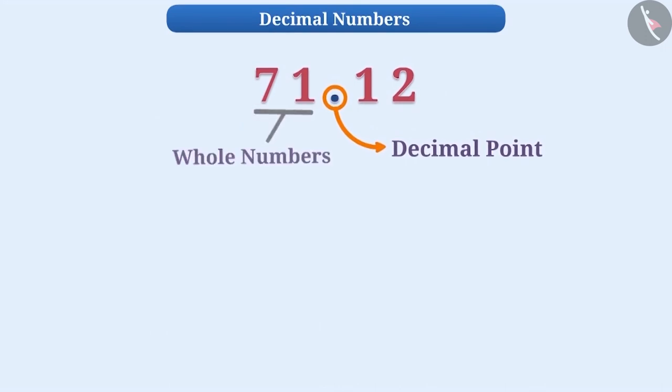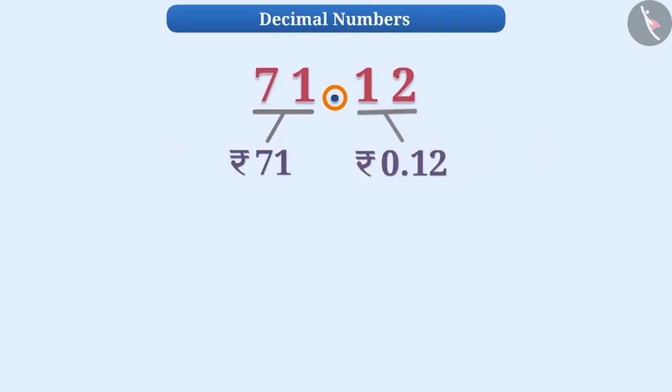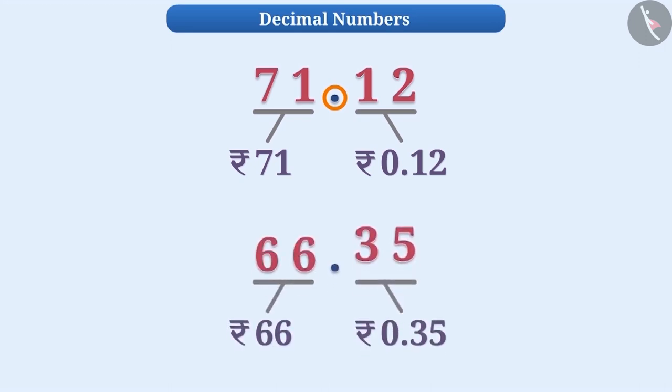Decimal point is used to separate a whole number from its parts. For example, with the help of a decimal point, Rs. 71 and 12 paise are separated. Similarly, Rs. 66 and 35 paise are also separated.